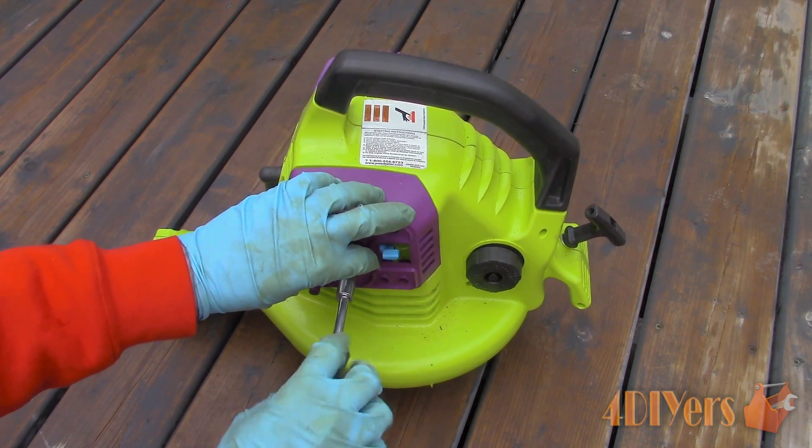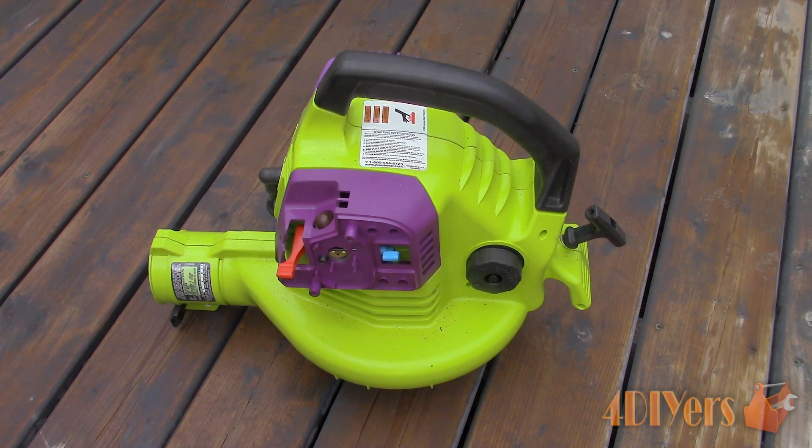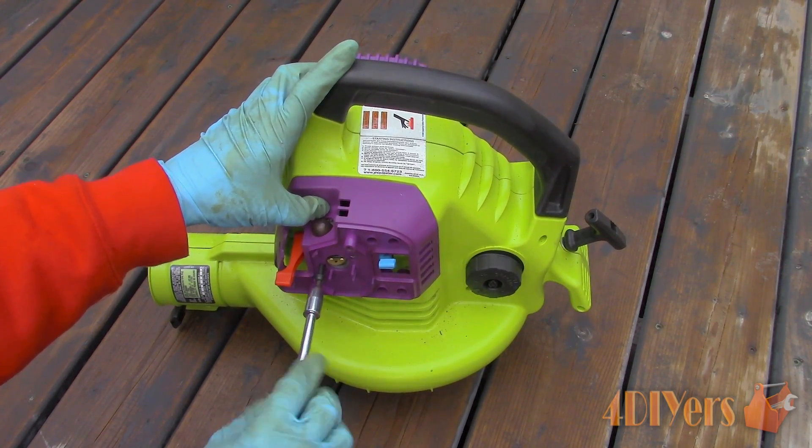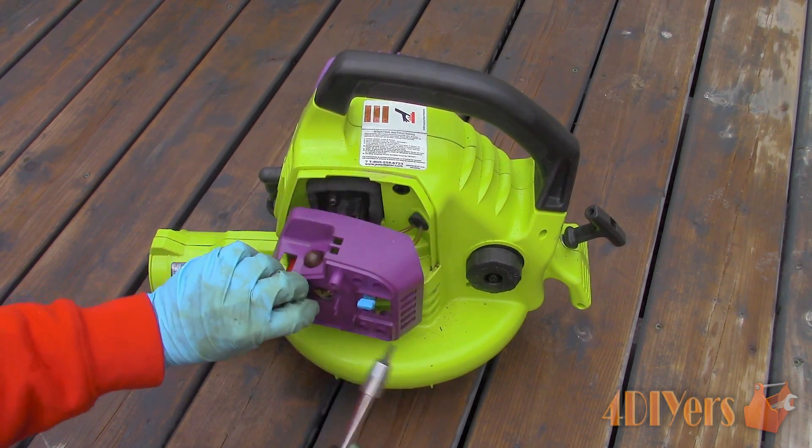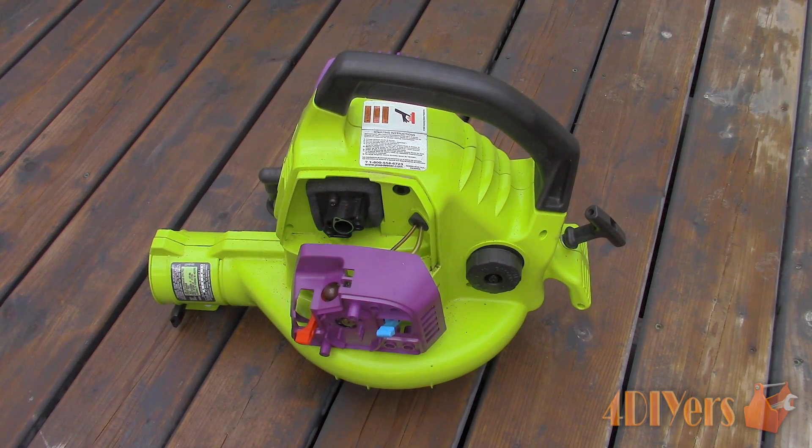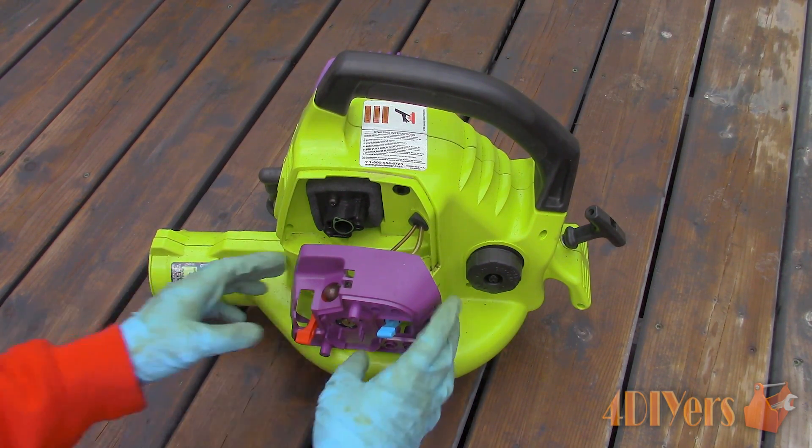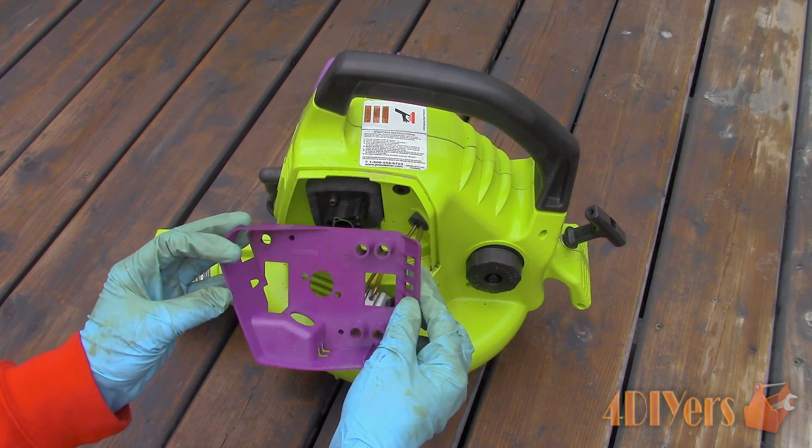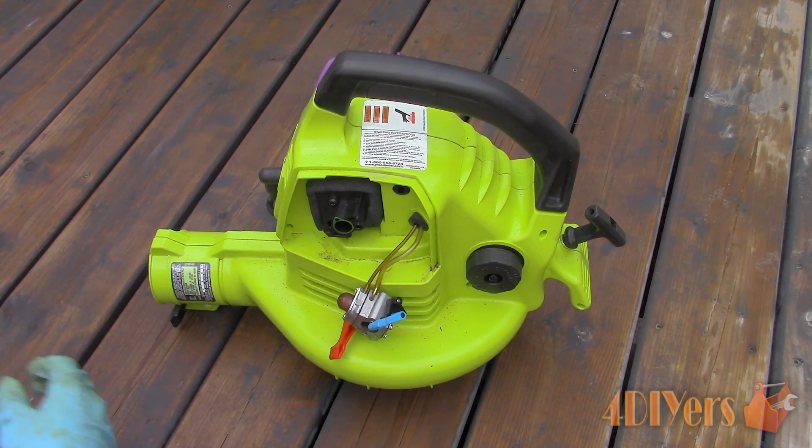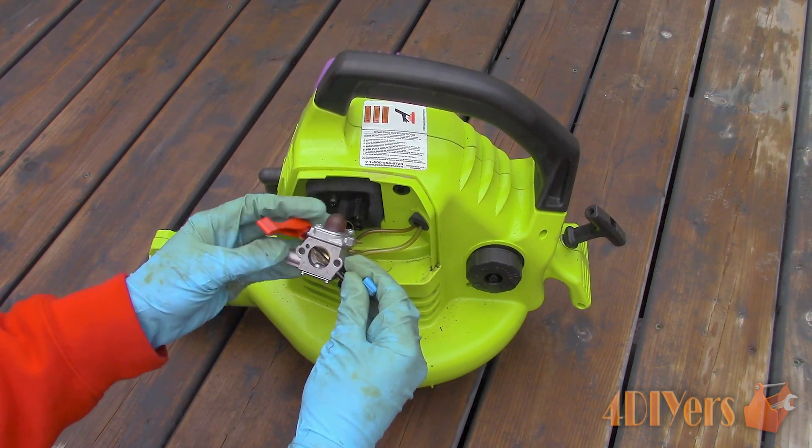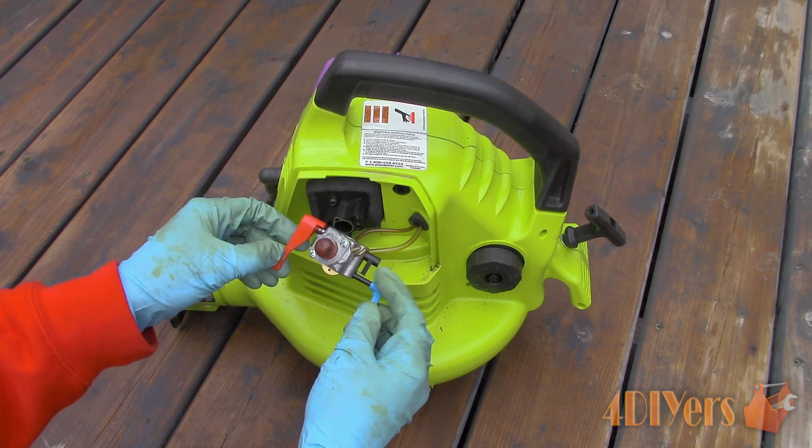The carburetor will be next. Here we have two 5/32 inch allen head screws which hold on both the plastic cover and carburetor. Depending on the design of your unit it may or may not have two fuel lines. If it does do not mix them up. One will be for the main supply for the carburetor and the other for the primer bulb. There may be some fuel present in the lines so have a cup handy to catch any of the excess fuel.